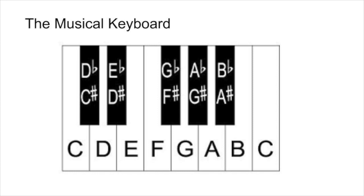The video that deals with accidentals actually started to discuss this idea that the black keys become our sharps and flats. So just as we have C, the black key just above that is going to be C sharp. And as you would have learned from that video, enharmonically it's also D flat. So our next white key is D.